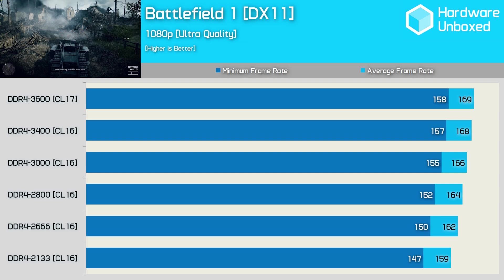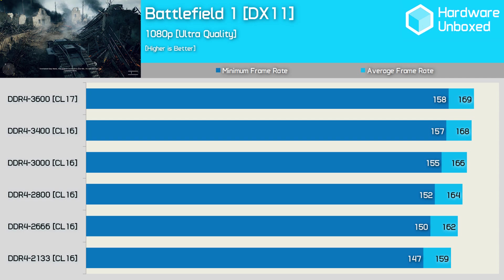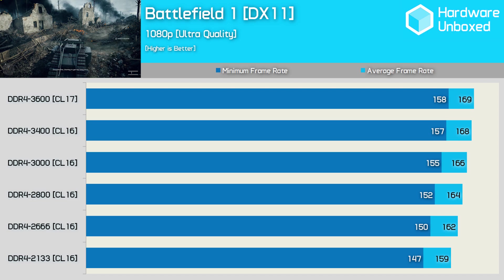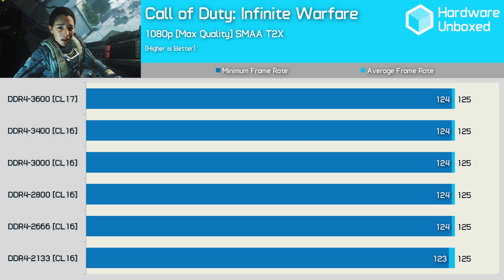First up we have Battlefield 1, tested with a Titan XP at 1080p. We do see consistent gains as memory frequency increases, though there is just a 7% increase in performance for the minimum frame rate when going from DDR4 2133 all the way up to DDR4 3600.